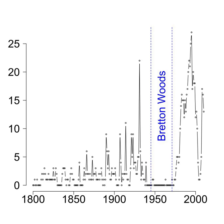Before April 2009, the IMF argued that a global annual real GDP growth rate of 3.0% or less was equivalent to a global recession. By this measure, there were six global recessions since 1970: 1974–75, 1982–83, 1990–93, 1998, 2001–02, and 2008–09.